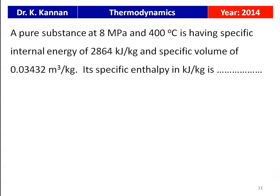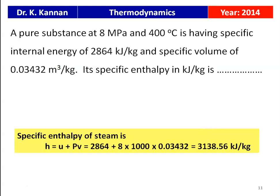A pure substance at 8 MPa and 400°C has a specific internal energy of 2864 kJ/kg and a specific volume of 0.03432 m³/kg. The specific enthalpy H = U + PV = 2864 + (8 × 1000 × 0.03432) = 3138.56 kJ/kg. This question is from the 2014 question paper.